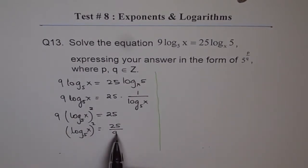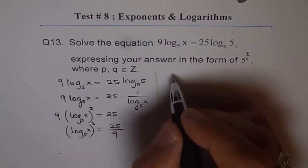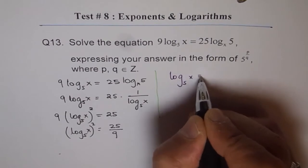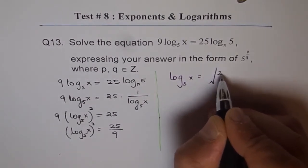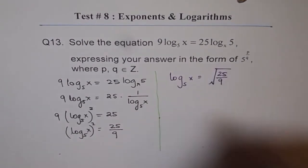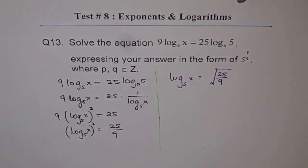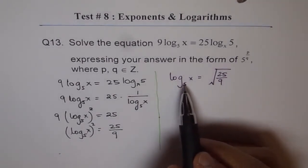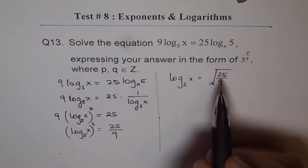So, to get the answer, we need to square root it. And since we know that log should be positive side, so we'll take only positive values. Okay. So, what we get here is log 5 of x equals to square root of 25 over 9. Well, 25 over 9 is what we get. So, x values, we're looking for x values.